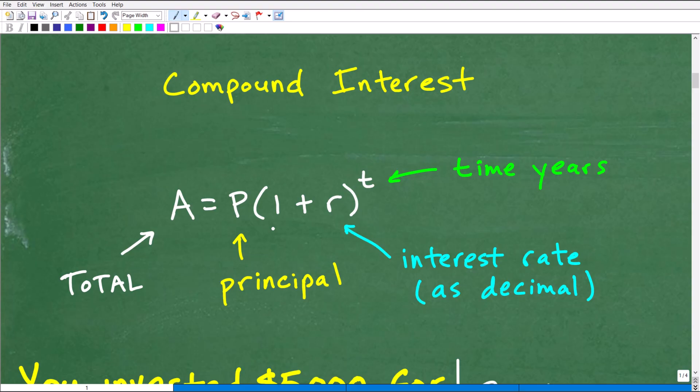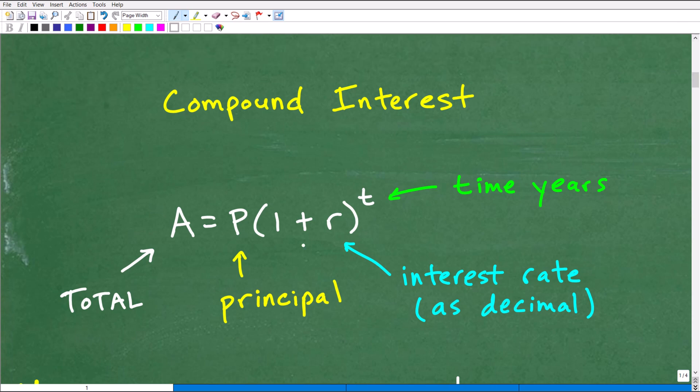And those are for additional problems. So this is kind of a basic introduction problem. So here is the nice, lovely formula that we need to know for annual compound interest. So it's A = P(1 + r)^t. So let's go ahead and talk about what these variables mean.